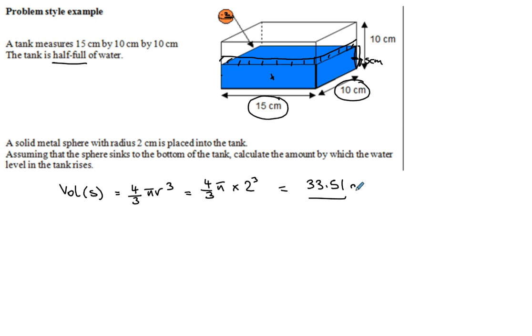So that 33.51 centimetre cube, the volume of the sphere, must be the volume of that bit there. But because the 15 and 10 won't change, then you know the height, the increase in the height. So we'll just call it H1 equals the volume, the total volume divided by 15 times 10. Because you know the volume will be the length times the width times the height. So if we want to find the height, we have to do the volume divided by the length times the width. And we get 0.22 centimetres. So that is the amount by which the water level rises.